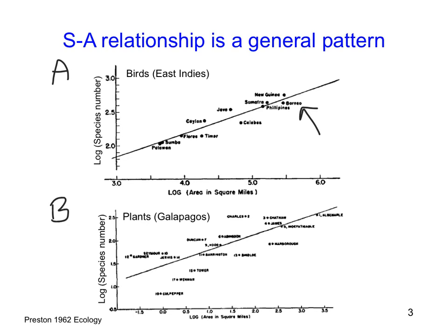The bottom panel shows plants in the Galapagos Island group. For smaller islands such as Culpeper, we see a small island area and concomitantly fewer species than we see for larger islands like Albemarle at the other end of the distribution. We see this pattern over and over again — if you take any species group and any cluster of islands and plot them, you see this positive slope.